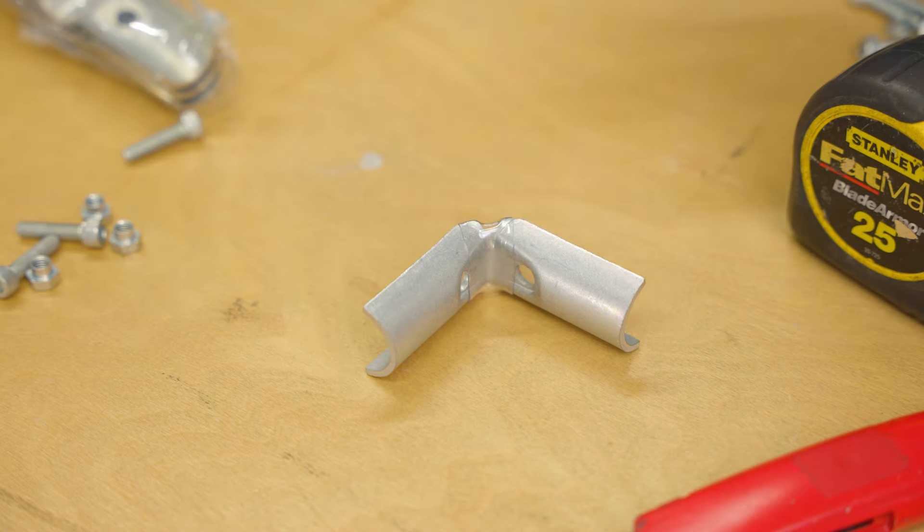We commonly see this connector used in structures that are longer or wider than five feet because it provides some key bracing elements that larger projects often need. It allows you to create an X-shaped grid while simultaneously adding a vertical support to your structure.